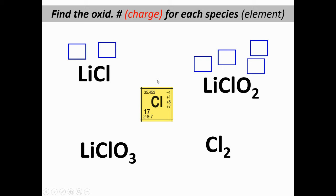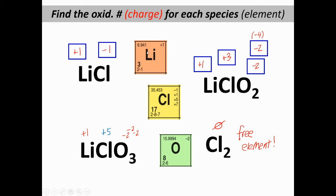Give these a shot and hit pause. Here are the answers: lithium is always plus one, so in LiCl, chlorine has to be minus one. LiClO₂ is a little more tricky — we know Li is plus one and oxygen is almost always minus two. We've got plus one from lithium and minus two, minus two — that's minus four from the oxygens — so chlorine in this case must be plus three.